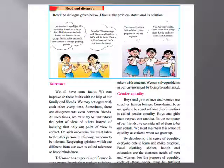Here, they have told us to read and discuss about the problem and solution. The first picture is about Savita and Samir. They don't want to take them for a picnic because they are playing pranks. Savita is good at singing and Samir is good at jokes. In the second slide, others are taking advantage of that, and Savita and Samir help them. They have explained tolerance and gender equality here.